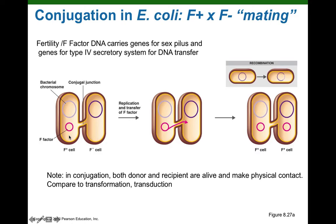Our F plus donor has the F factor in the form of a plasmid, along with the donor's chromosomal DNA. We're right at the stage where the donor is going to transfer a copy of the F plasmid to the recipient. So we see here the donor transferring a copy of the F plasmid to the recipient. The recipient has now received a copy of the F plasmid, the conjugation bridge will be broken, and we'll have two separate cells.